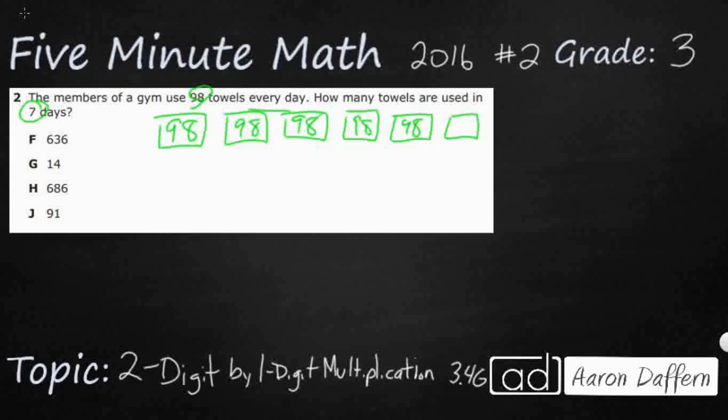Now if I wanted to, I could add those numbers. Repeated addition would work, but that would be kind of long and hard. So let's look at different ways that we can do two-digit by one-digit multiplication.